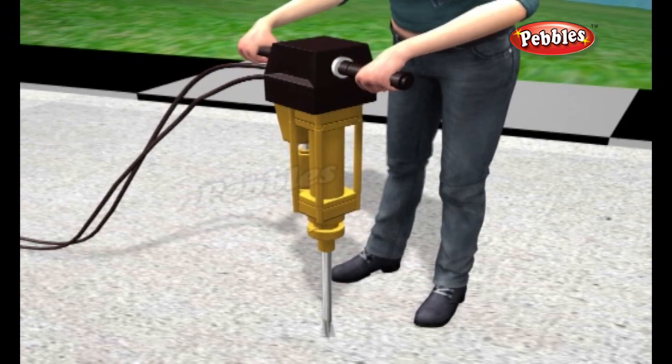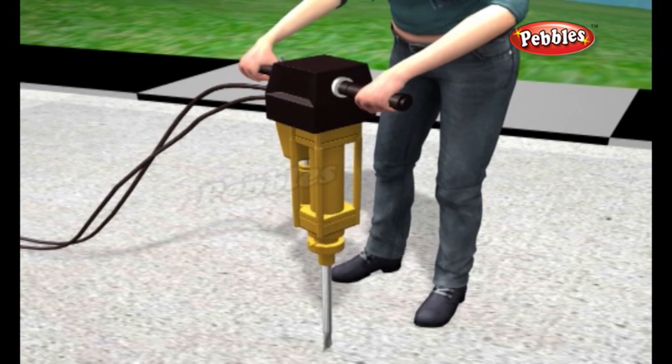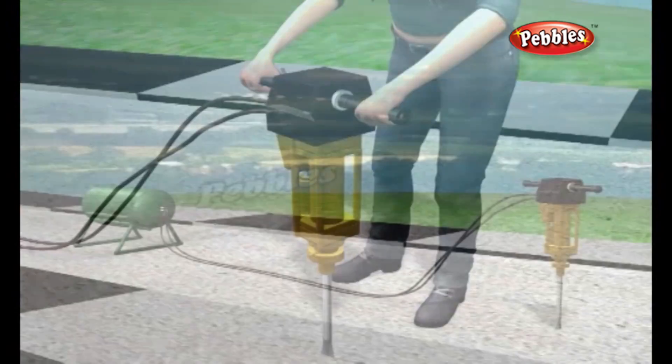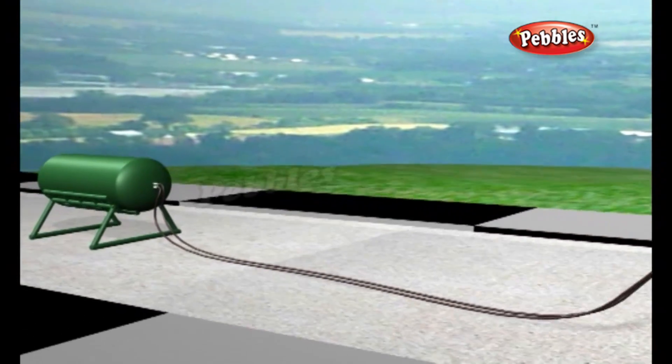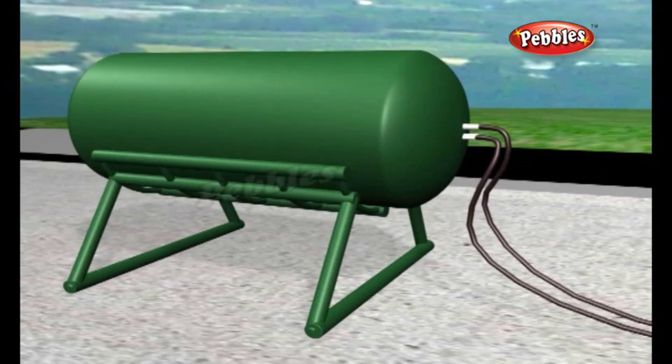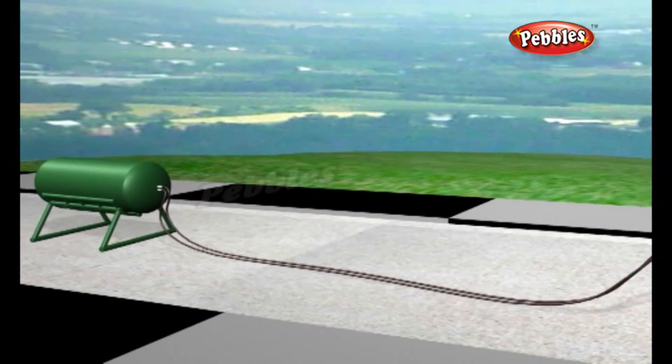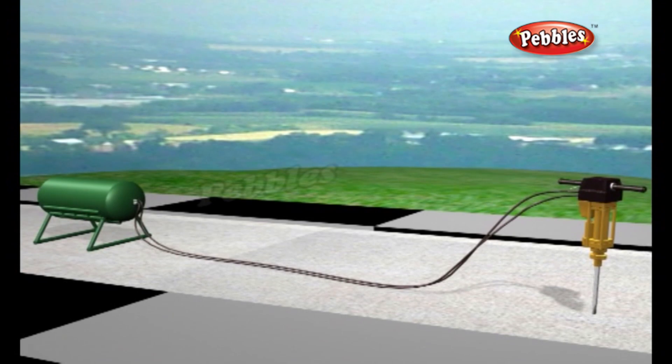When we see someone digging a hole in the road with a tool like this, we would probably think the equipment was electric or powered by a diesel engine, right? In fact, the only energy involved in making a jackhammer pound up and down is supplied from an air hose.